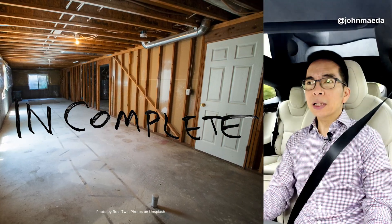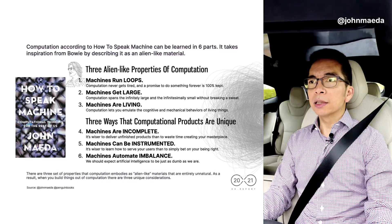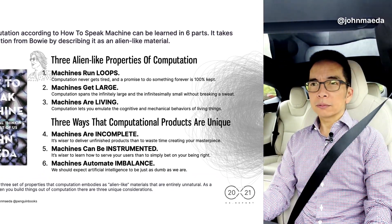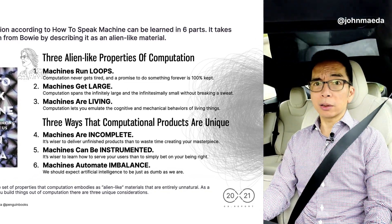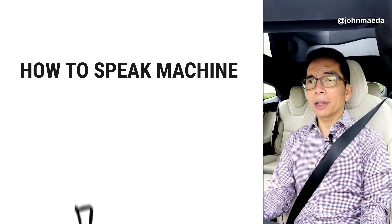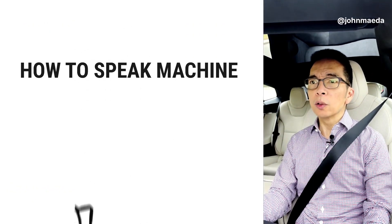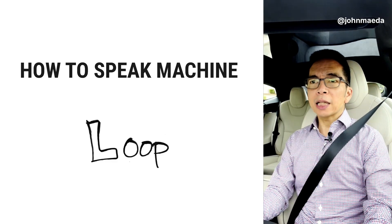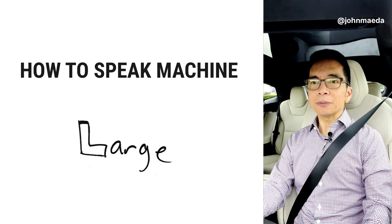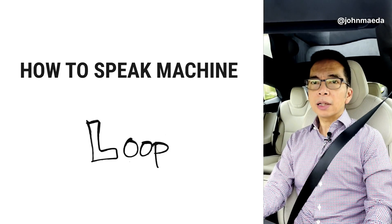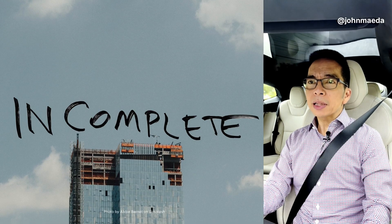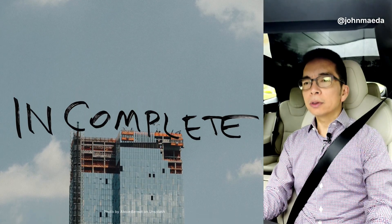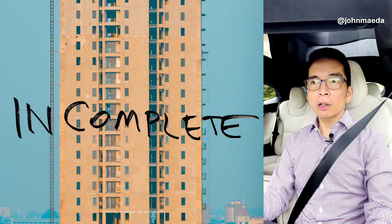Why would you ship anything unfinished? It's because you can't. The material is different. It never takes a break, it can do all this stuff. And so, you have to change how you think about products getting made. As a result, you ship things incomplete — you give them to someone to use before they're finished.